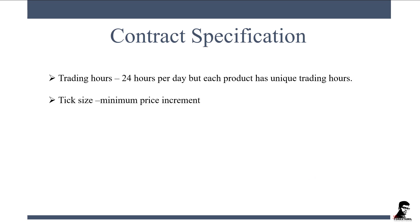The next parameter is tick size. Tick size is the minimum price increment. Whenever there is a fluctuation in the market there is a small price increment, and tick size varies from contract to contract.